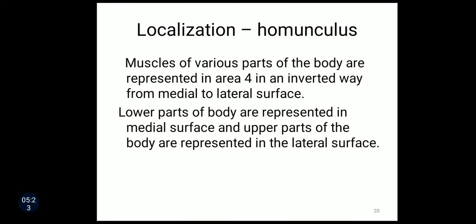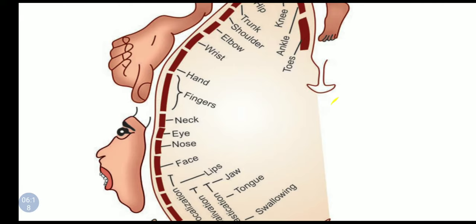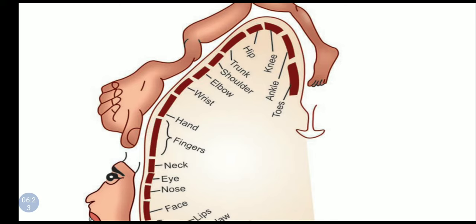This is also called localization or homunculus, particularly related to area number four. The muscles of various parts of the body are represented in area four in an inverted manner from medial to lateral surface. The lower parts of the body are represented on the medial surface and the upper parts of the body are represented on the lateral surface — that is called the homunculus. The order of representation from medial to lateral surface is: toes, ankle, knee, hip, trunk, shoulder, arm, elbow, wrist, hand, fingers, and face. However, parts of the face are not represented in an inverted manner.